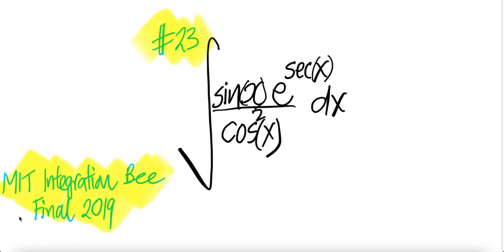Number 23, MIT Integration Bee Final 2019. The integral of sin x times e to the power sec x divided by cos square x dx.